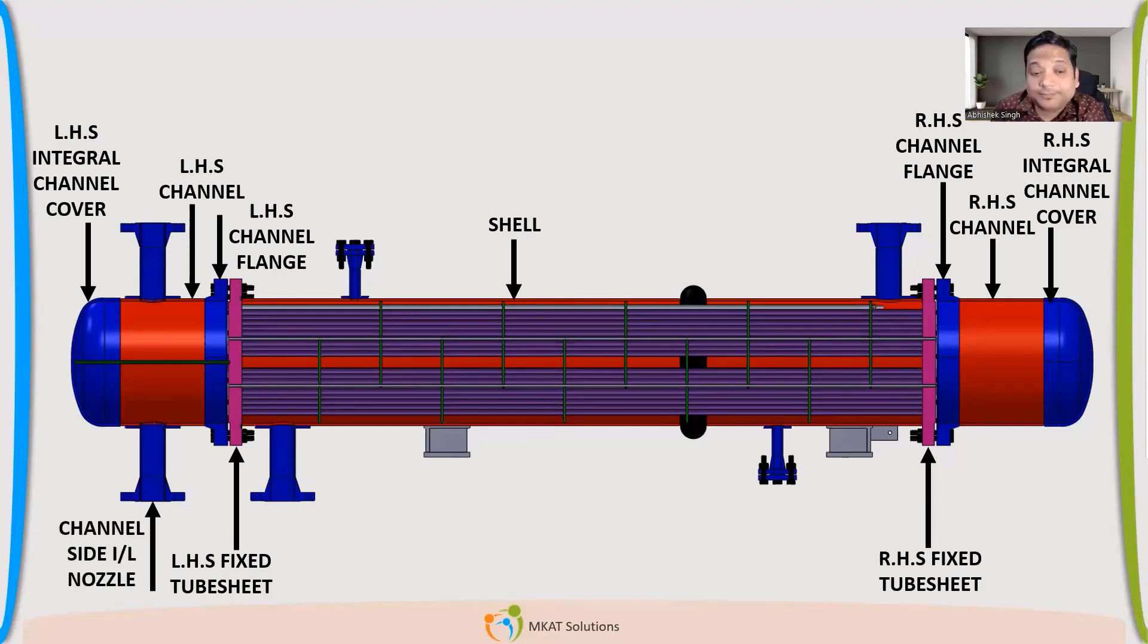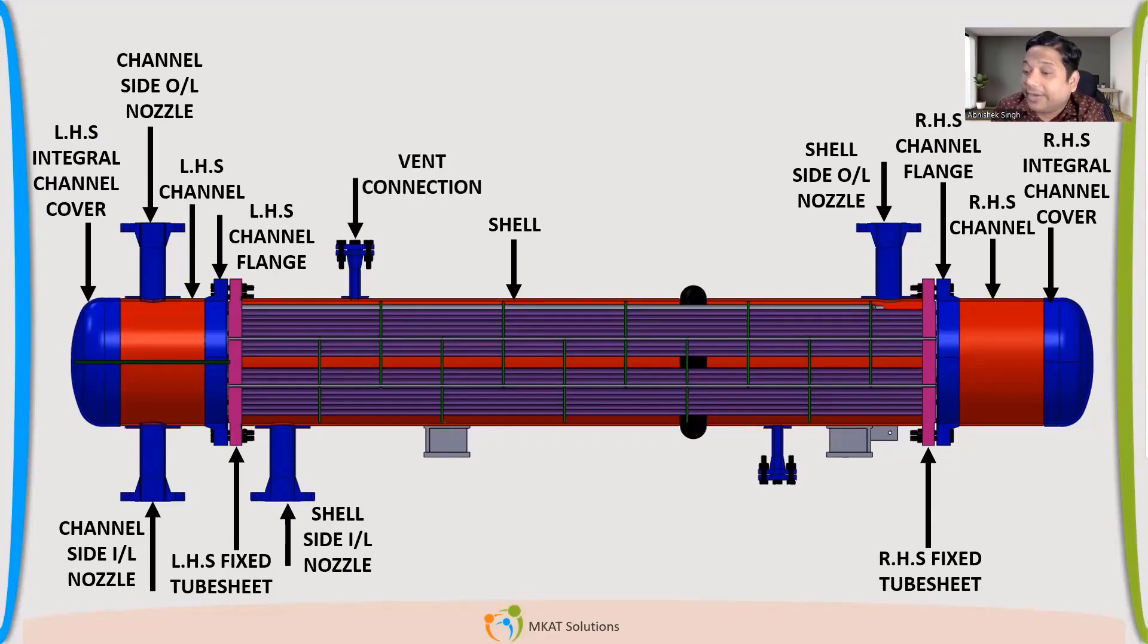Channel side inlet nozzle. Channel side outlet nozzle. Shell side inlet nozzle. Shell side outlet nozzle. Then there are some vent connection. There is some drain. So vent will be at the top. Drain will be. And even sometimes, vent or drain can be connected with these nozzles.